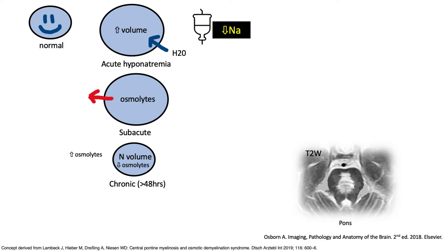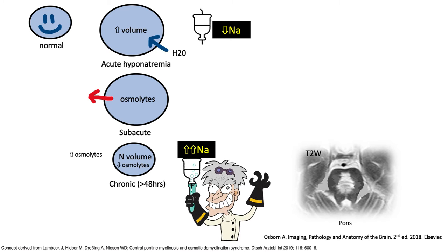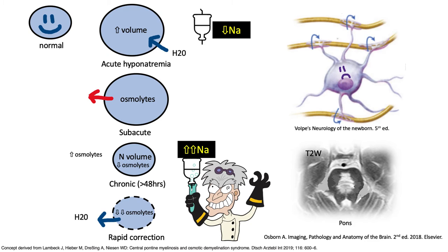If one was to rapidly correct the sodium levels, water will exit the cell, and this rapid exit cannot be matched by the influx of osmolites, which takes time. As a result of this osmotic stress, the cell will go into apoptosis. In the brain, the highly metabolic oligodendrocytes are very sensitive to this osmotic stress.